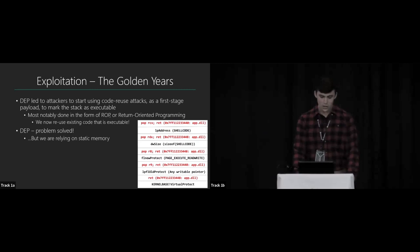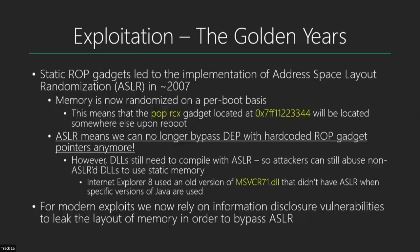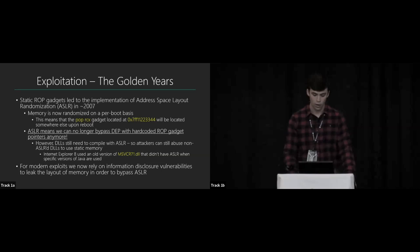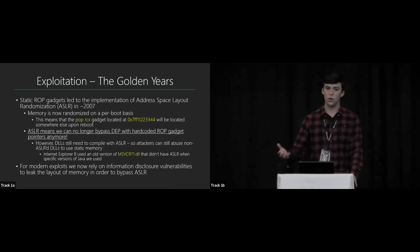But there's an issue: those ROP gadget addresses are hard-coded from app.dll, and we're relying on static memory in the application to bypass DEP. Static ROP gadgets like this led to the implementation of another mitigation called Address Space Layout Randomization, or ASLR. Memory is now randomized on a per-boot basis. That ROP gadget at address 7FF1234 won't be located there anymore after a reboot. So ASLR means we can't use hard-coded pointers to bypass DEP.